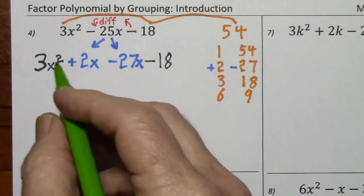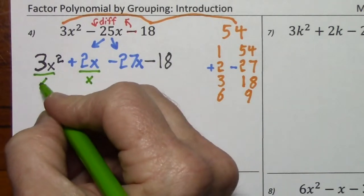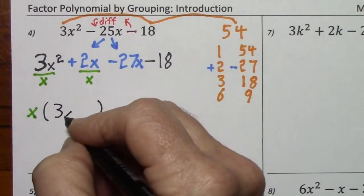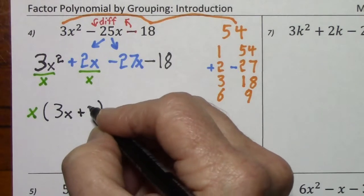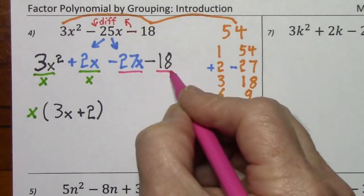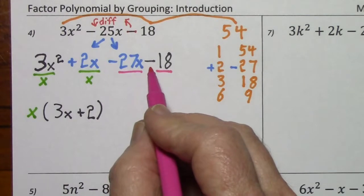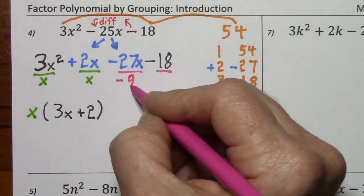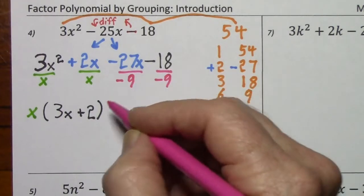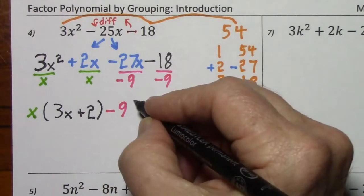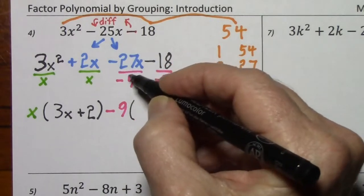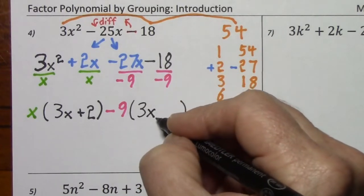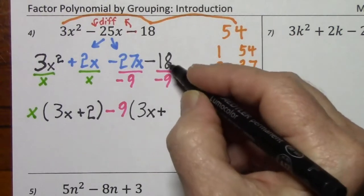Now for the grouping: group together the first two, factor out the GCF — in this case, x. Here it would leave us with 3x, and here we would get plus 2. Grouping together the next two terms, looking for the GCF — I could factor a 9 out of each term, but notice these are both negative. In parentheses, I want my terms to both be positive. So I'll factor out a negative 9, which means I put negative 9 in front of the parentheses. Negative divided by negative gives a positive inside, and 27 divided by 9 is 3.